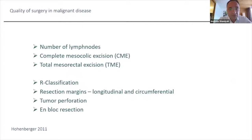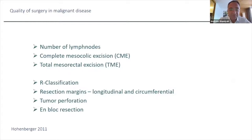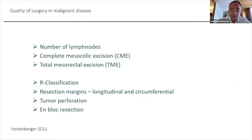Quality of surgery in malignant disease is assessed by the number of lymph nodes, the quality of the mesocolic fascia (CME), and in rectal cancer the TME. We also consider the R classification, resection margins longitudinally and circumferentially, whether there is perforation of the tumor or meso, and whether it's en bloc resection.